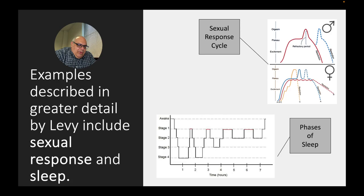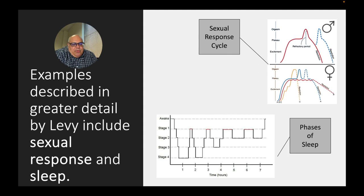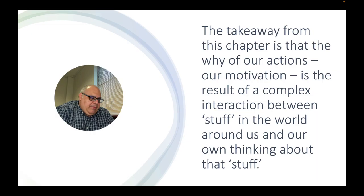The Levy textbook goes into much more detail, but uses two examples: the sexual response cycle and phases of sleep. These are meant to be examples of behaviors — sexual behavior and sleep behavior — whose patterns tend to look very similar across humans because we are human. If you are a human being, you will almost certainly follow a certain pattern in terms of sexual response; if you are a human being, you'll tend to follow a certain pattern in terms of your sleep cycle.